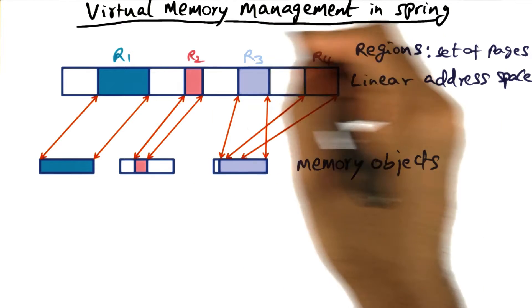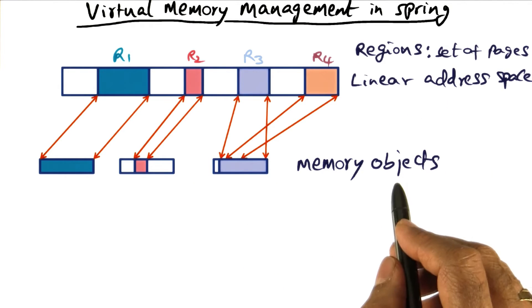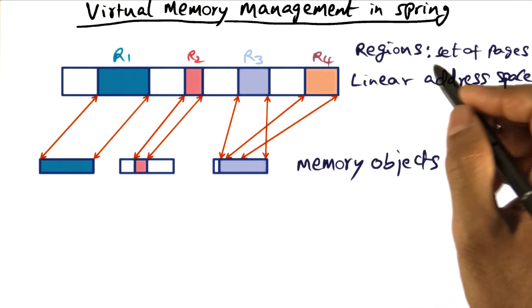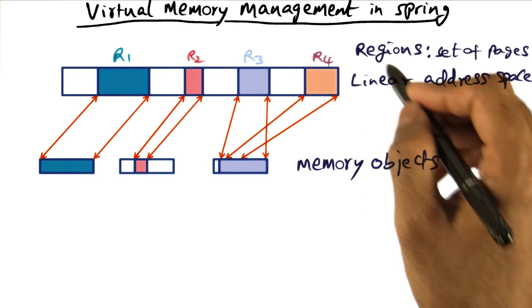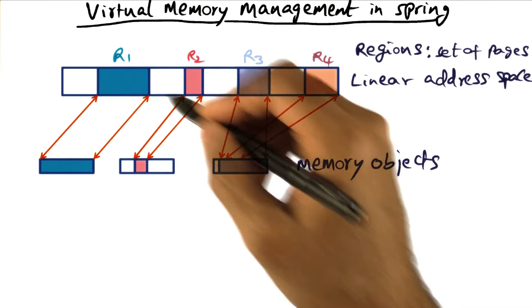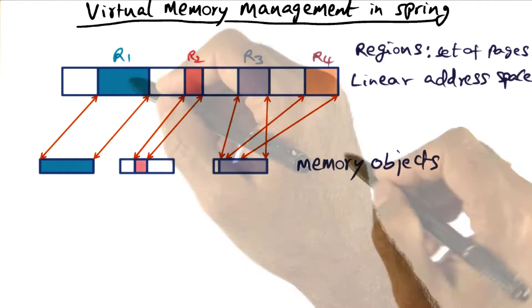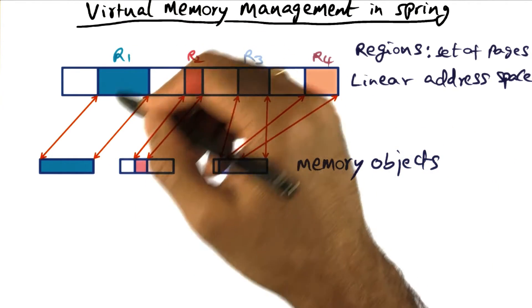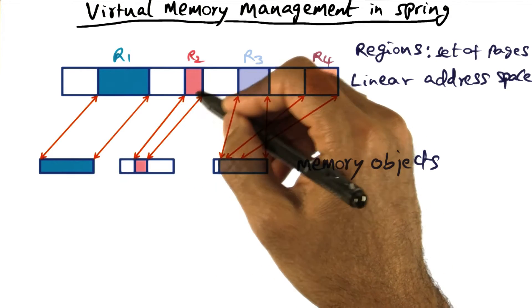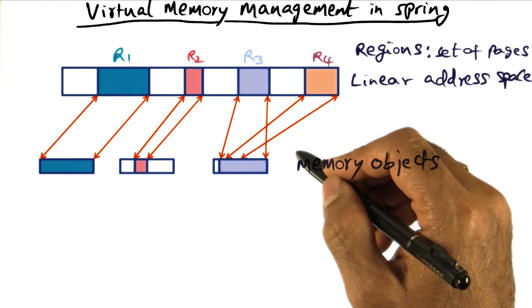The second abstraction in the virtual memory management system is what is called a memory object. The idea of breaking up this linear address space into regions is to allow these regions to be mapped to different memory objects. So for instance, this region is mapped to this memory object. This region is mapped to a portion of this memory object.